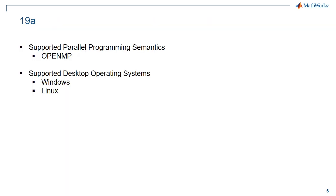In 19A, OpenMP pragmas will be generated for loops that run in parallel. When generating code for host desktop machines, only Linux and Windows operating systems are supported.